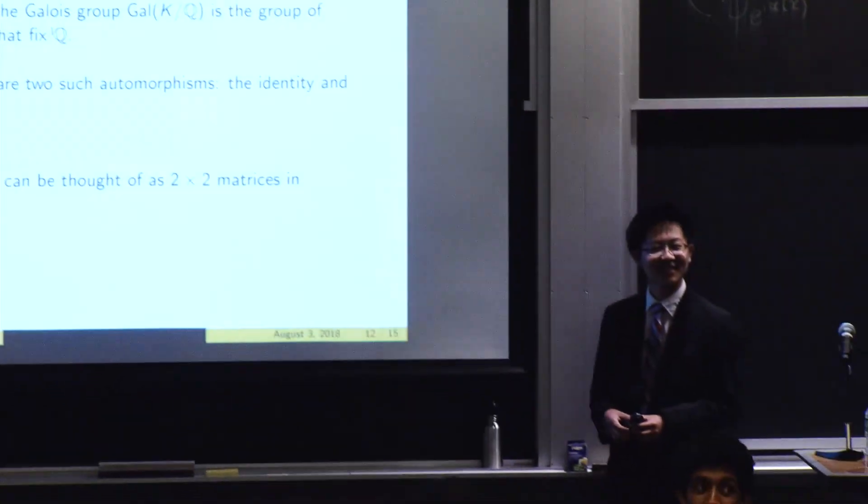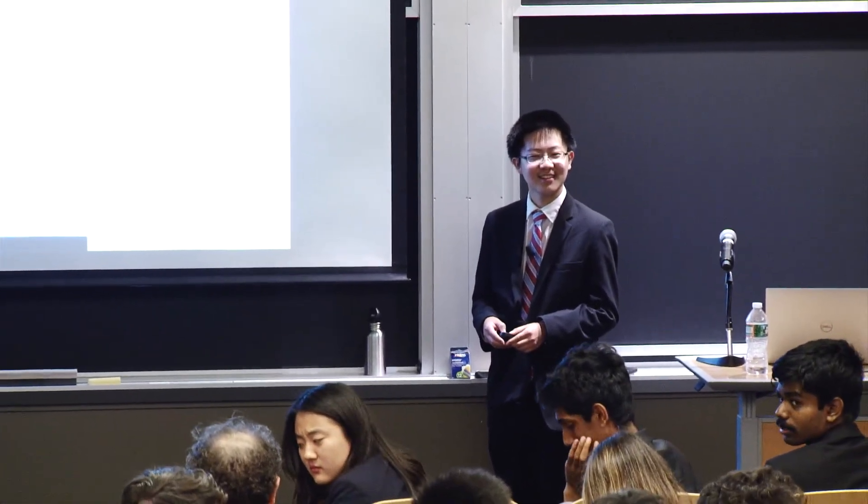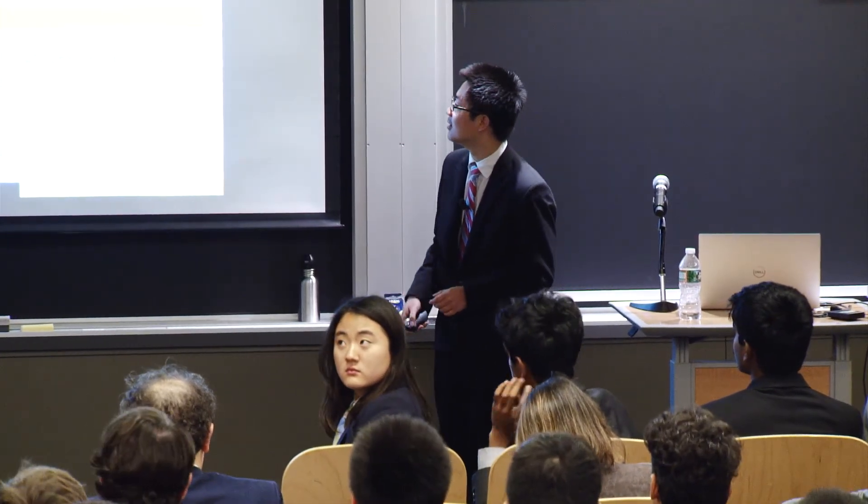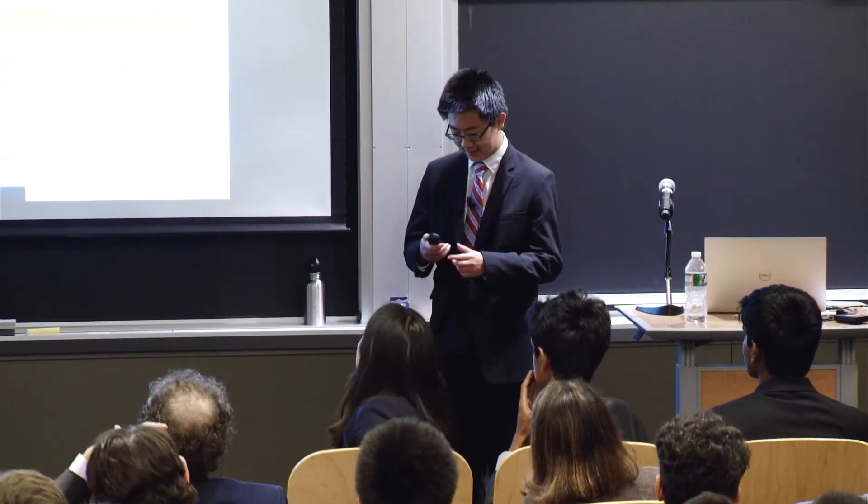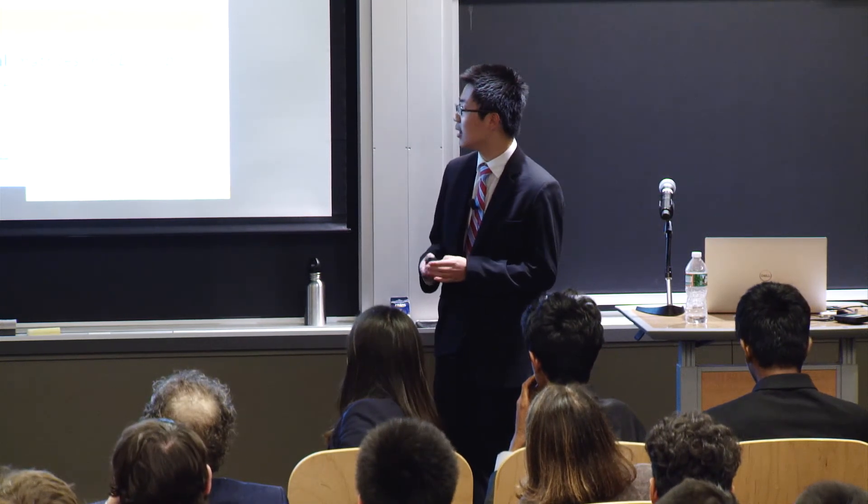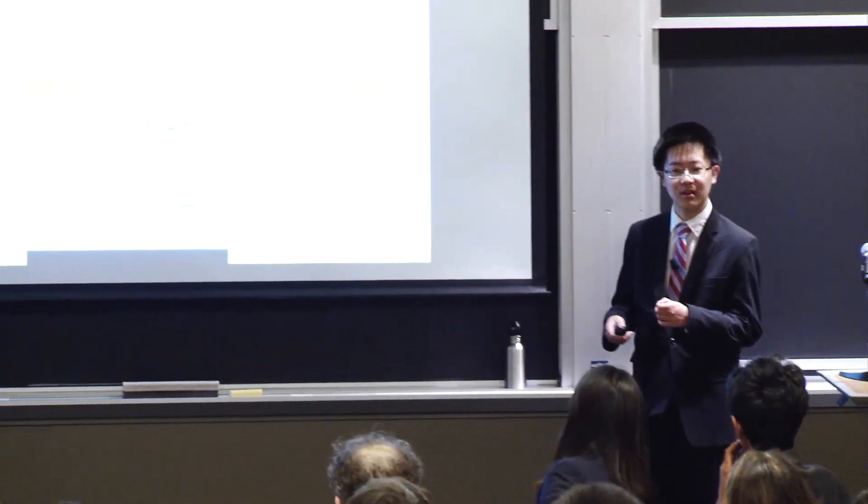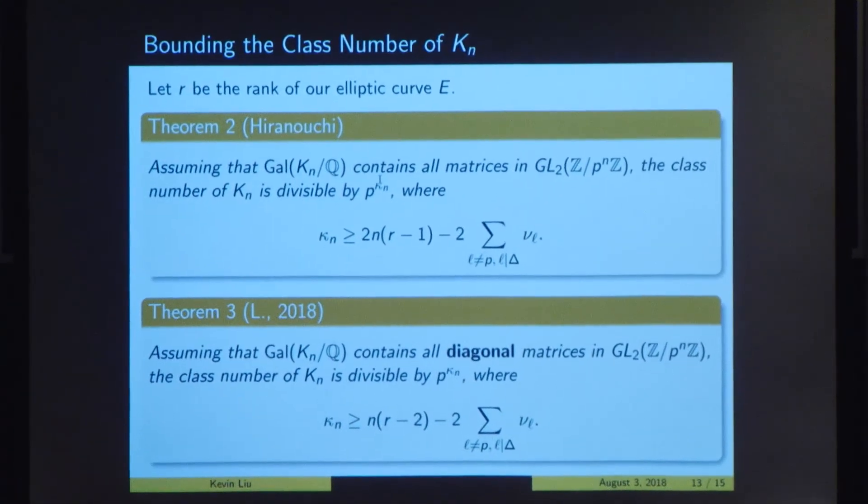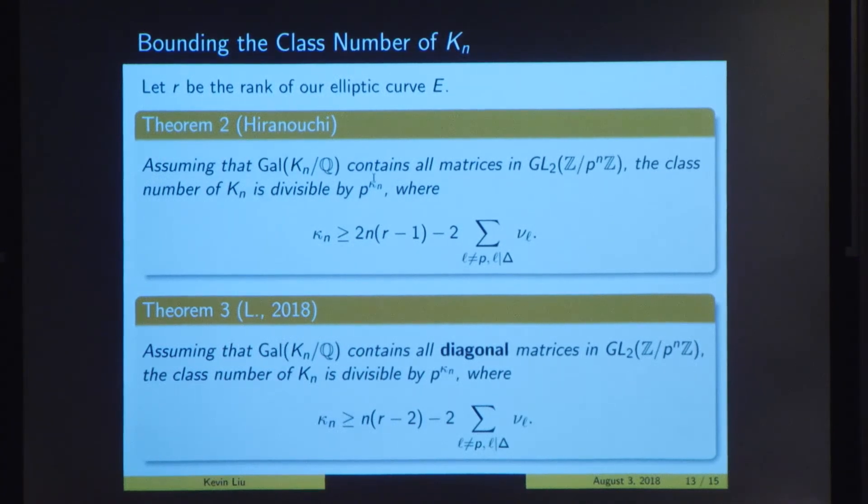I saw Franklin raise his hand a minute ago. Yeah. How are the ingredients in your proof different than that of Hiranouchi? Okay. So how is my proof different from Hiranouchi's? Well, the answer is that the outline is the same, but the details of finding the degree of the extension are somewhat different.